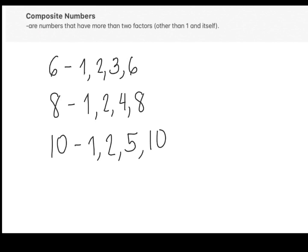We now know the difference between prime and composite numbers. Prime numbers are numbers that have only 2 factors, 1 and itself, while composite numbers are numbers that have more than 2 factors, other than 1 and itself. Now, I will give you a challenge: think of the numbers from 1 to 100 that are prime and composite. You can pause this video and list down all the numbers from 1 to 100 that are prime and all the numbers that are composite, and later I will give you the answer.